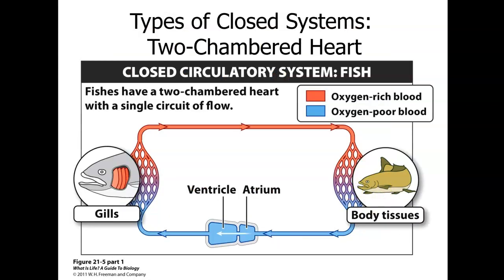Fish have a two-chambered heart with single circuit flow. Oxygen comes in through the gills as blood is pumped through the body, delivering oxygen to the body tissues and picking up carbon dioxide. That blood is then pumped to the heart — the atrium receives it, sends it to the ventricle, and the pressure from the ventricle sends it back to the gills.